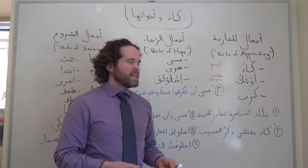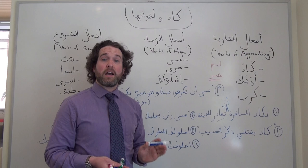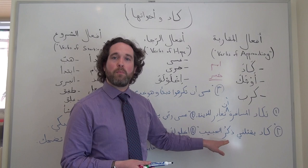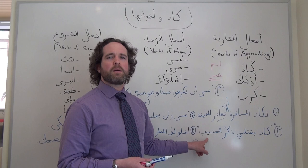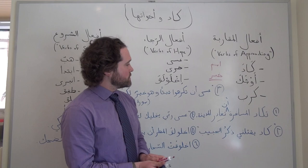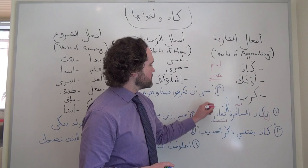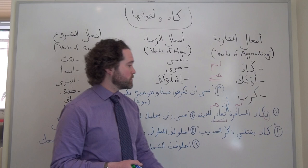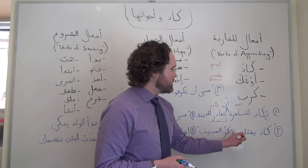With أفعال المقاربة, sometimes we see أن before the second verb, but it's not necessary, and in fact a lot of the time we don't see it at all. Here's another example from a poem by أبو مواس: كَادَ يَقْتُلُنِي ذِكْرُ الحَبِيبِ — the memory of my beloved almost killed me. In these examples, المسافرة is our اسم and تغادر is our خبر — a present tense verb. Similarly, ذِكْرُ الحَبِيب is our اسم and يقتلني is our خبر.